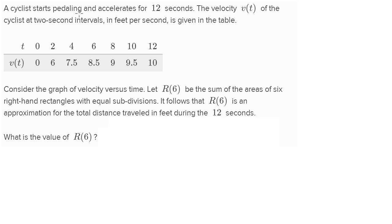A cyclist starts pedaling and accelerates for 12 seconds. The velocity v of t of the cyclist at two second intervals in feet per second is given by the table. They tell us at different times — after four seconds, velocity is 7.5 feet per second.